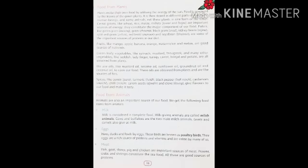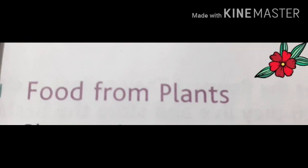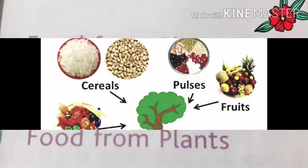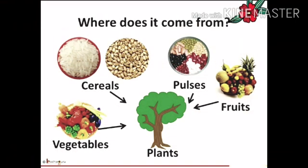First of all, let's take food from plants. As you know, we have already discussed during the first chapter, plants are known as autotrophs. Why? Because they are able to prepare their own food.